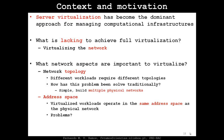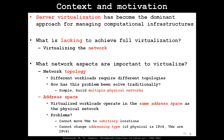Another important thing to virtualize is the address space, and this is something that FlowVisor doesn't do. Virtualized workloads in FlowVisor have to operate in the same address space as the physical network. If you're using addresses 10.x for your physical network, you have to use the same for the virtual network. So you can't move VMs to arbitrary locations because they have different IP addresses — you'd have to change configurations. You can't change the addressing type either: if the network is IPv4, VMs must also be IPv4. It doesn't really offer full network virtualization.